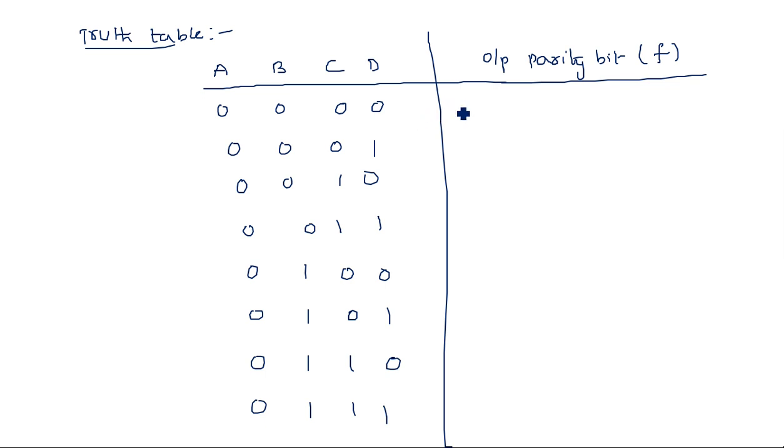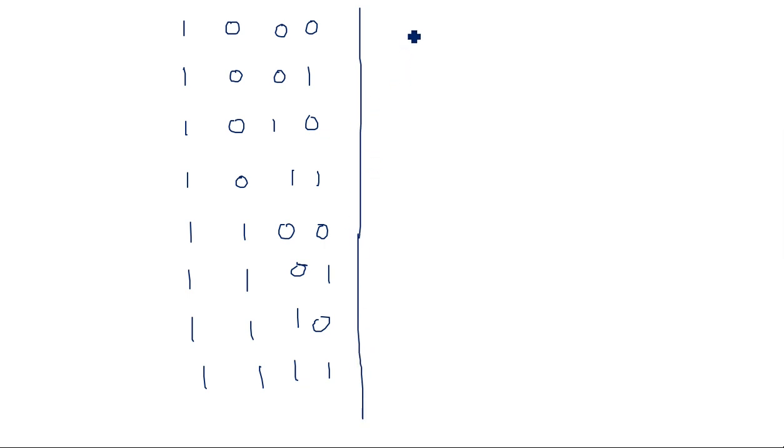Filling in the truth table: when the number of ones is zero, the parity output is zero (even). When the number of ones in the message bit is one, the parity bit is one so that the total becomes even. We continue this pattern through all 16 combinations — rows 0 through 15 — where the parity bit makes the total number of ones even. The resulting output column gives: 0, 1, 1, 0, 1, 0, 0, 1, 1, 0, 0, 1, 0, 1, 1, 0.